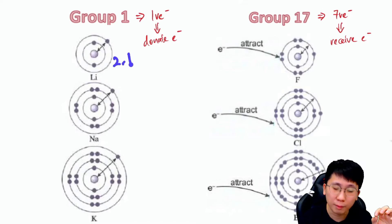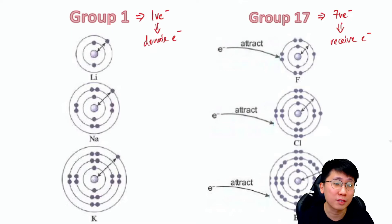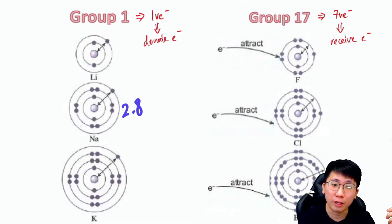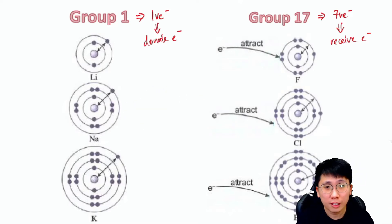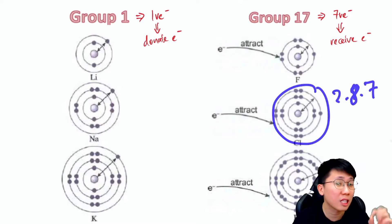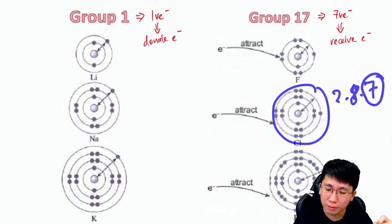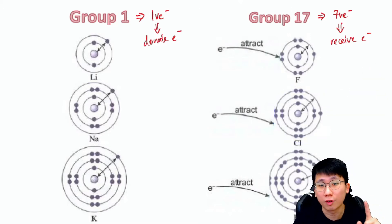For example, lithium has the configuration 2.1, so when it donates one electron it becomes just 2 — stable. Sodium is 2.8.1; once you remove that one electron it becomes 2.8 — stable. For Group 17, chlorine is 2.8.7, so to become stable it gains one electron to make that seven into eight.